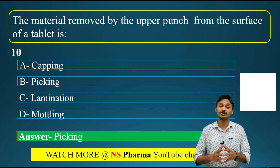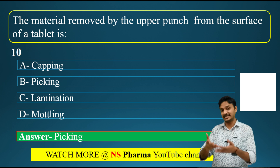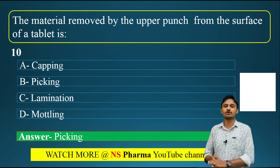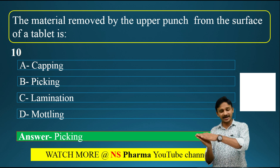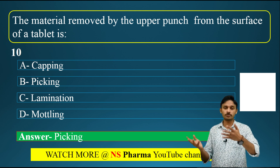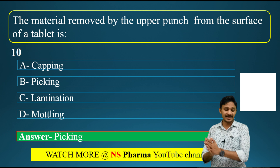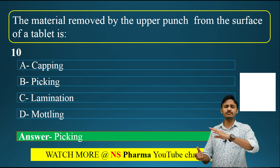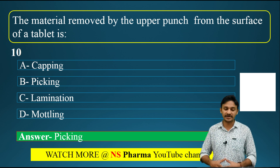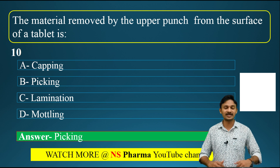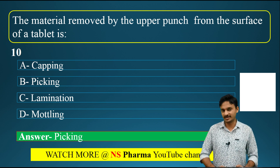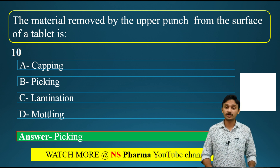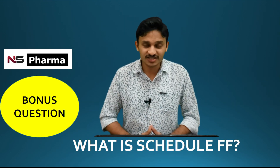Lamination is the separation of a tablet into two or more distinct layers, where a tablet is completely separated into two or more complete layers. In capping, there are no distinct layers - just partial or complete removal of the top or bottom of the tablet. Mottling refers to unequal color distribution.